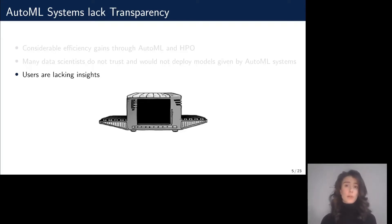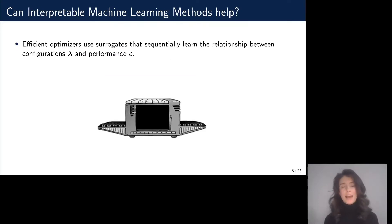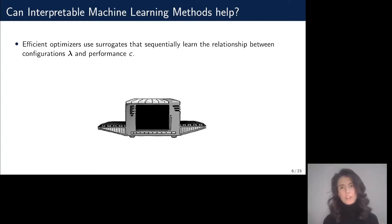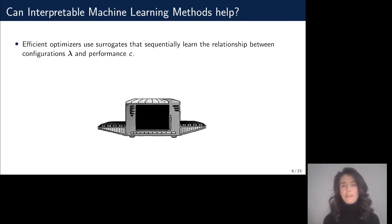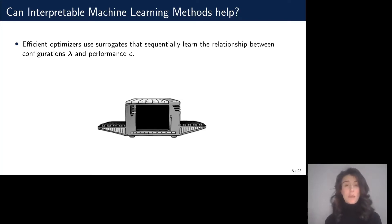What can we do about it? Hyperparameter optimization is based on an efficient optimizer, which usually uses surrogate models that sequentially learn the relationship between configurations and model performance. As those surrogate models are basically the intelligence of an AutoML system, it would be very interesting to analyze, interpret, and understand the surrogate model — what the AutoML system has learned. Unfortunately, the surrogate models are black box models in themselves, so it is not straightforward to interpret them.